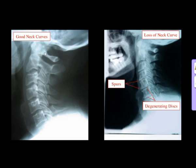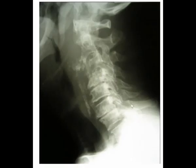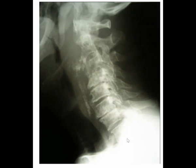It is important to have a good curve in the neck rather than a straight neck or a reverse curve. In this picture, the curve is obviously forward and you can still see a little bit of disc space in some areas, but in other areas the disc space is very thin — you can hardly distinguish between the two bones. This is a very severe case of degeneration in the neck, typically seen in elderly patients where the neck is very painful and very stiff.